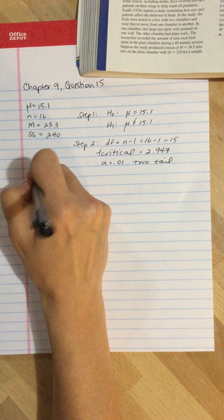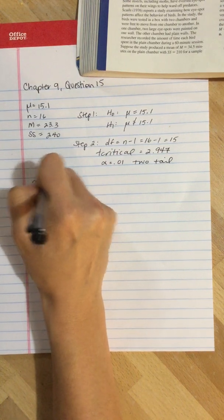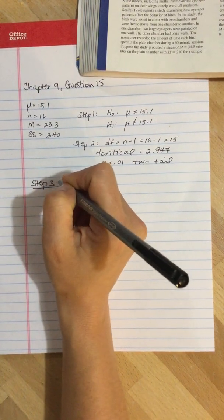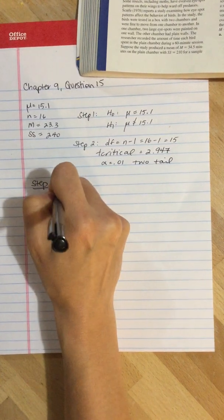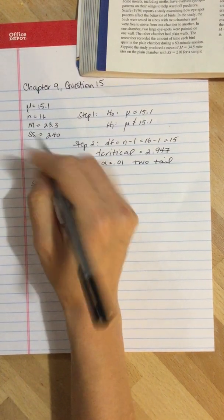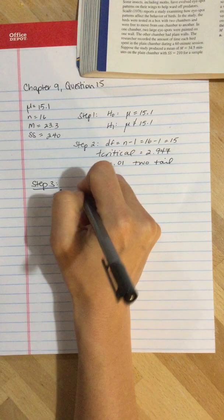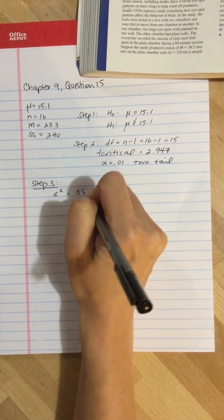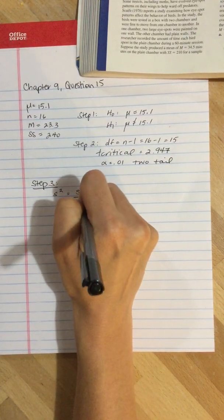Step three, we calculate the test statistic. The first thing we need to do is calculate the variance because we have the sum of squares. We're going to take the sum of squares and divide it by n minus one.